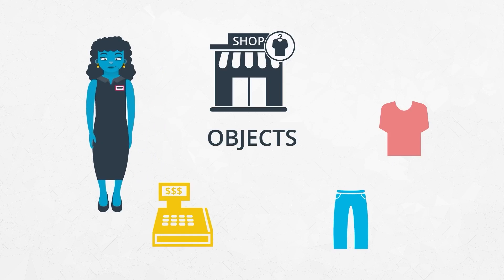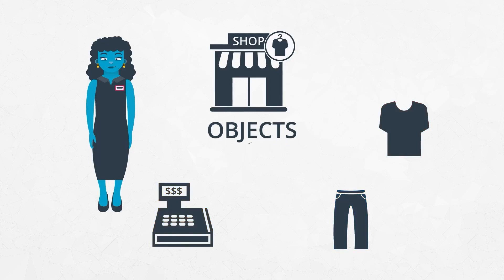An object-oriented program would focus on the individual characteristics of each object and what each object can do. An object has two essential parts: characteristics and actions.